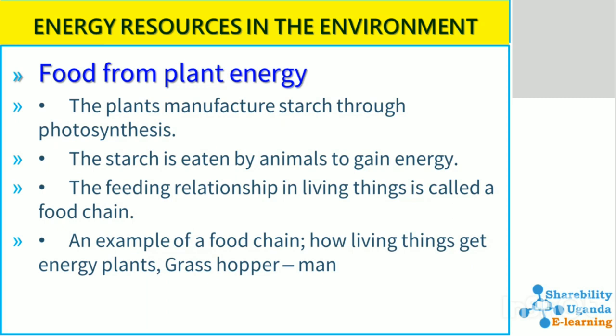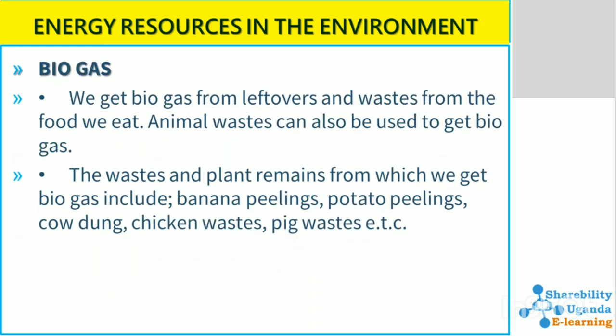Food from plant energy: plants manufacture starch through photosynthesis, and the starch is eaten by animals to gain energy. The feeding relationship among living things is called a food chain — for example: plants are eaten by a grasshopper, a man eats the grasshopper, and the manure helps to fertilize the grass, which is eaten by animals to gain energy.